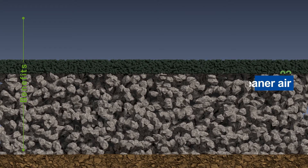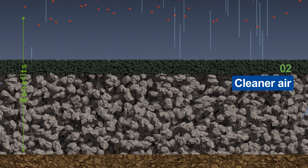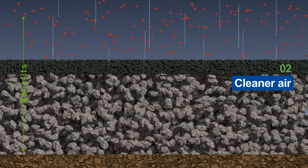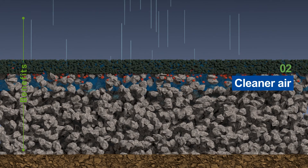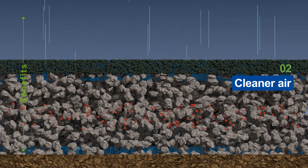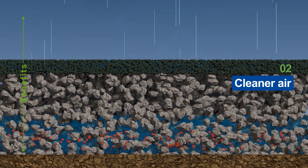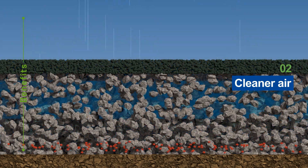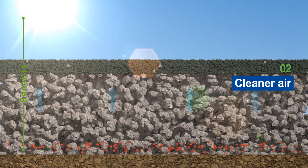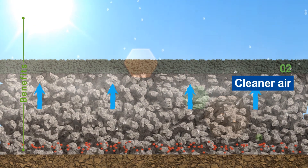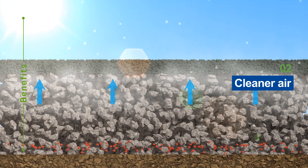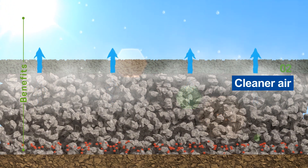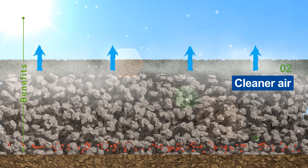Another added benefit from using ElastoPave is cleaner air. The irregular openings of the ElastoPave make it difficult for dust to rise back into the air, contributing to a more purified and cleaner environment.